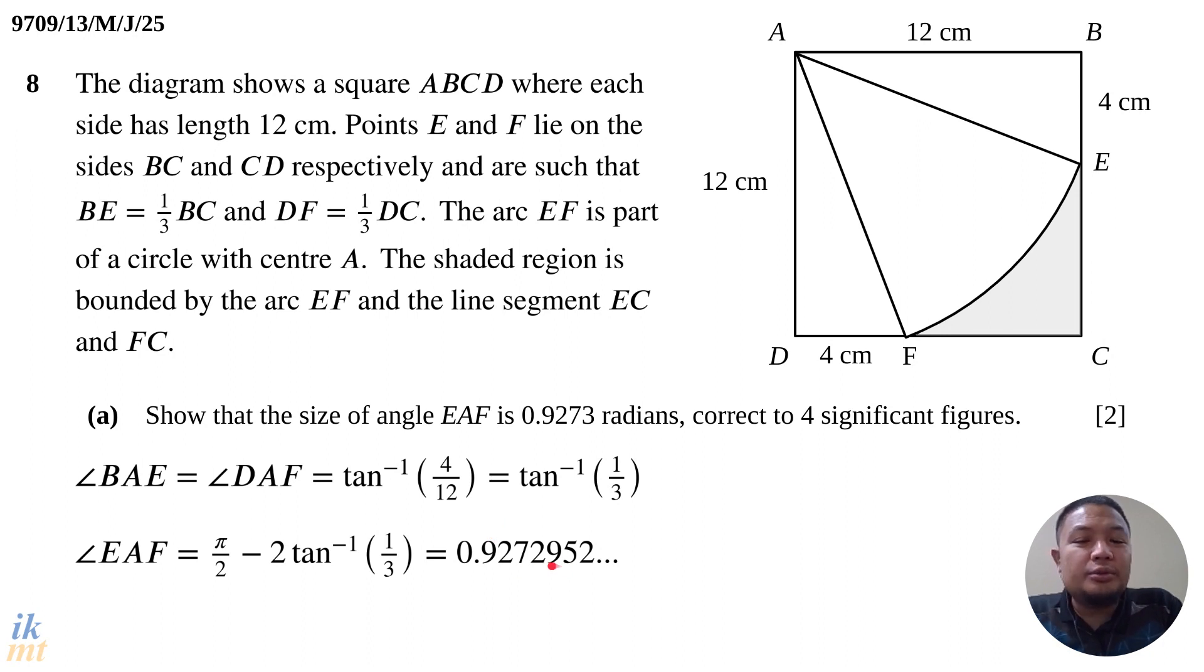You should write at least 2 more significant figures than what they asked for, so write 0.927295. They want to see that the value you obtain can be rounded to 0.9273. Part of the concept they're testing is your ability to round correctly. If you do this correctly, you should get 0.9272952 in your calculator. It's very easy to know if you did it right or wrong.